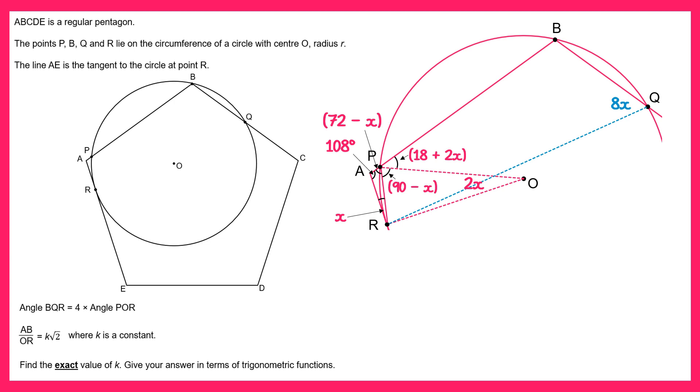Then what we can do is look at the quadrilateral RPBQ which is this one here. That's a cyclic quadrilateral since all of the vertices are on the circumference of the circle, so we can use the circle theorem that says the opposite angles in a cyclic quadrilateral must add to 180. So opposite the angle BQR which is 8x is angle RPB which is the sum of the angles 18 plus 2x and 90 minus x. If we add all of those angles together that must give you 180.